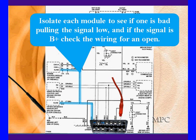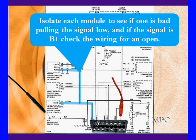But if the signal is B+ at any one of these modules, check the wiring for an open between that module and the DLC. We got here because we had zero volts at pin 7. If we go to the module's K line and it's at battery voltage, that battery voltage is not getting to the diagnostic connector. If we see battery voltage at a module and it's zero volts at the diagnostic connector, you're going to see a more complicated circuit.